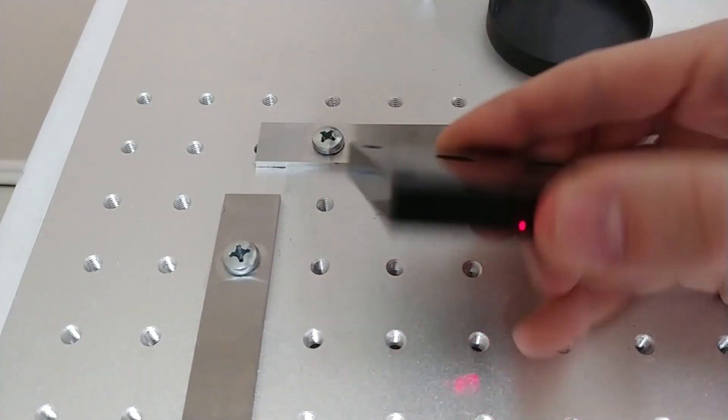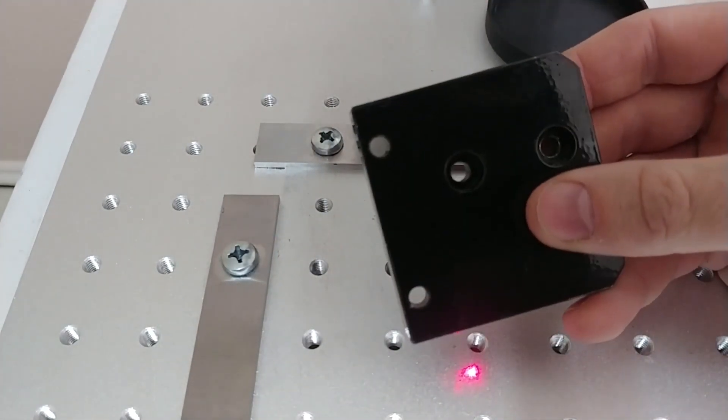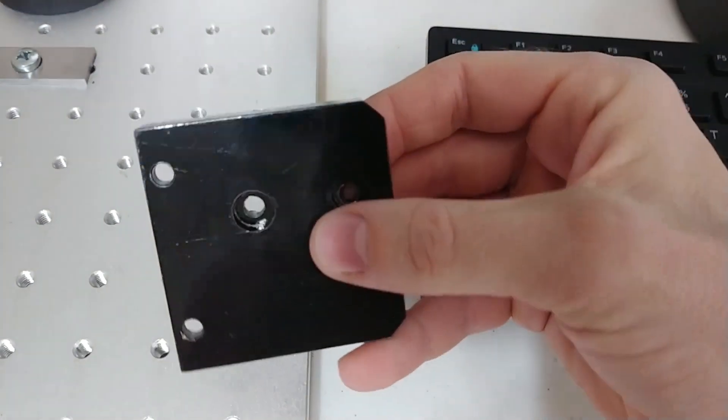So this is a piece of powder coated 6061 aluminum. I did the powder coat. It's probably about five thousandths of an inch thick. It's not real thick.